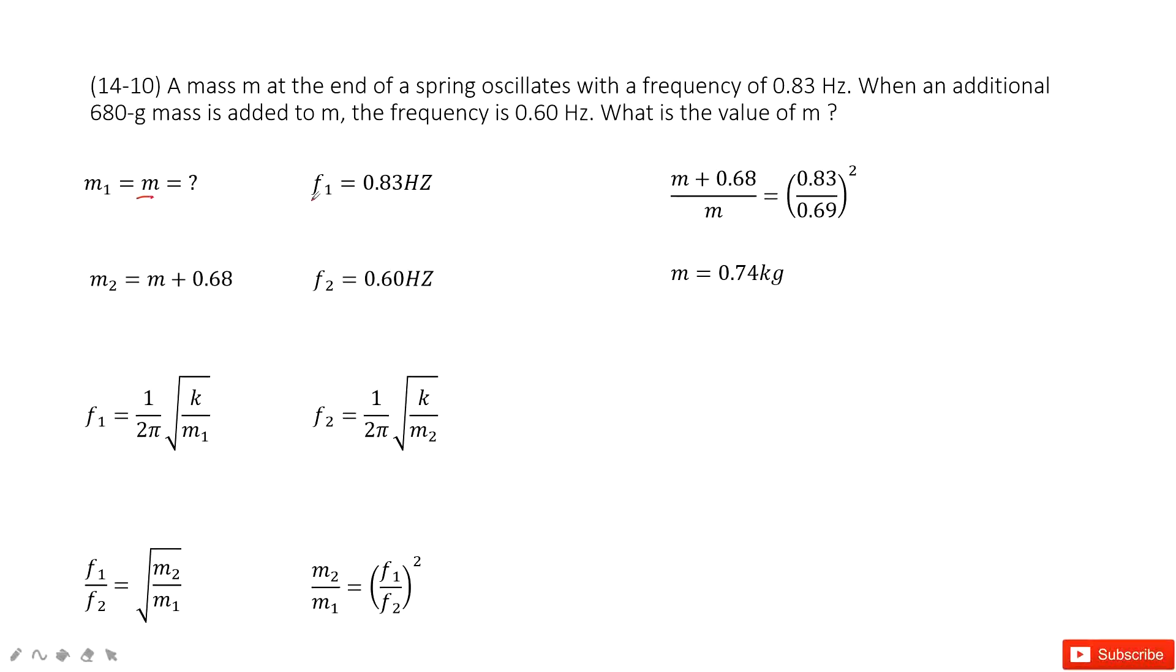The frequency is given there. And then we add another mass to attach it to m. So the mass in situation 2 becomes m plus this additional mass 0.68. The frequency changes to 0.6 Hz. We need to find the value of the mass.